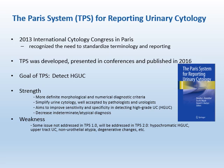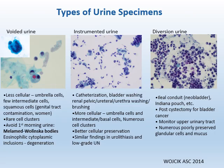TPS has many strengths. It includes more definitive morphological and numerical diagnostic criteria and simplifies urinary cytology, which has been well accepted by pathologists and urologists. It aims to improve sensitivity and specificity in detecting high-grade UC and decrease atypical diagnosis. It also has a few weaknesses. Some issues not addressed in TPS 1.0 will be addressed in TPS 2.0, including hypochromatic high-grade UC, upper tract UC, non-urothelial atypia, degenerative changes, etc.